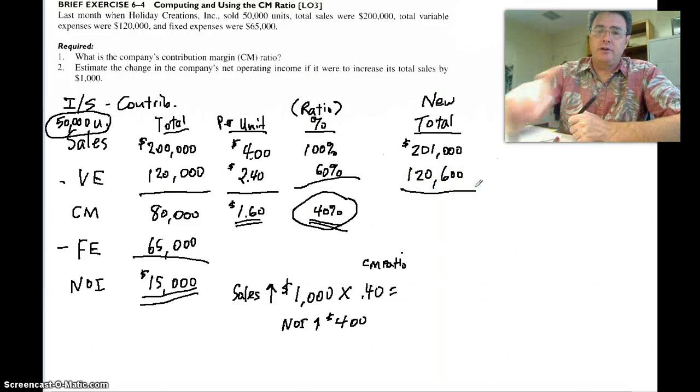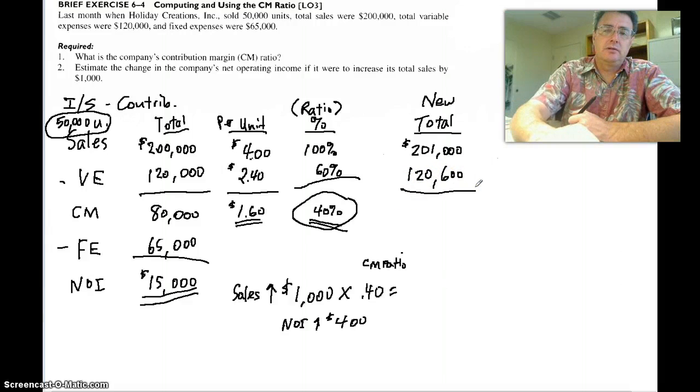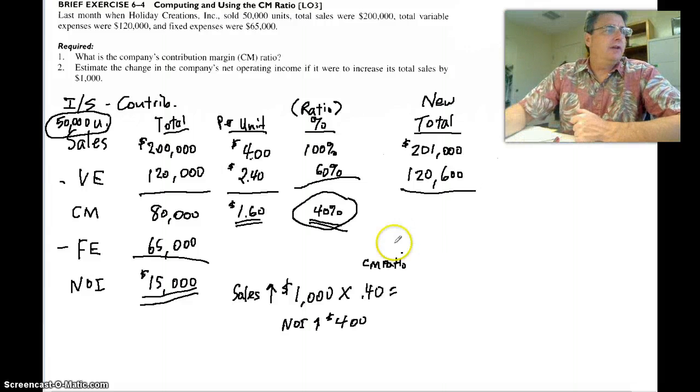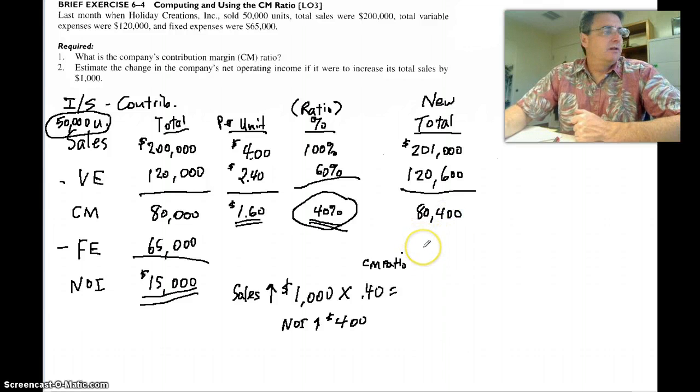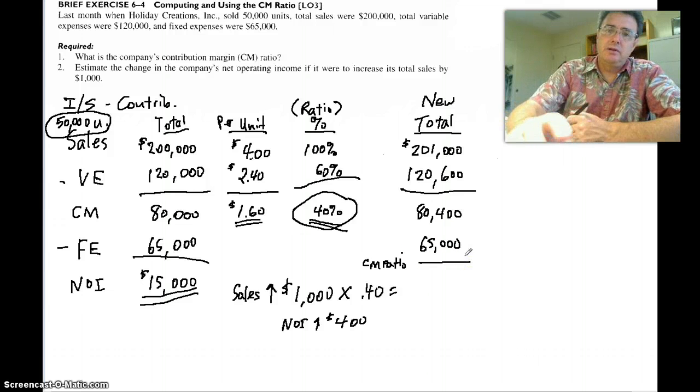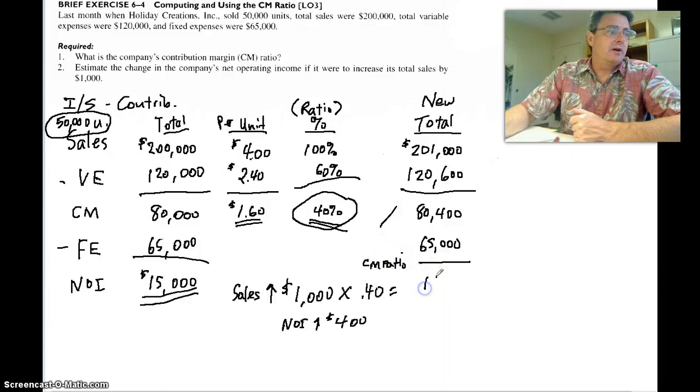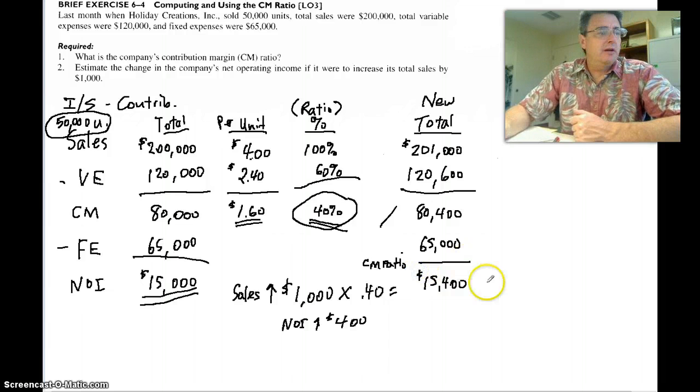So what's 60% of our new sales number? $201,000 times 60%, $120,600. That means our contribution margin is now $80,400. How about our fixed expenses? They're fixed. They remain the same. $65,000.